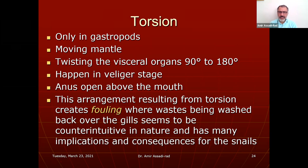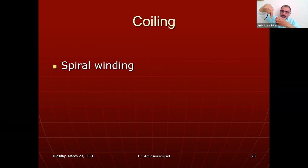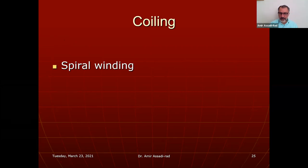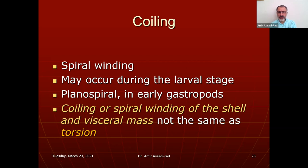The arrangement from torsion creates fouling, where waste is washed back over the gills — counterintuitive and with many consequences for snails. Coiling is different from torsion: coiling is when the shell spirals around as the animal ages. The apex is the oldest portion, and the shell grows bigger over time. Coiling of the shell and visceral mass is not the same as torsion.